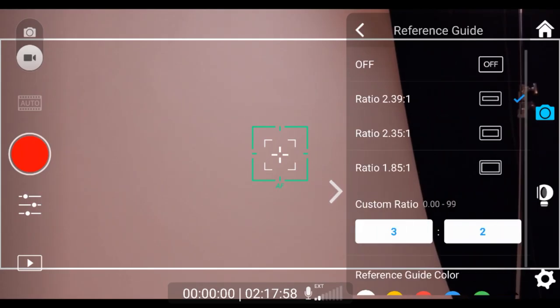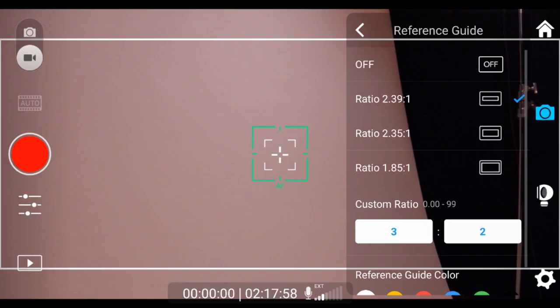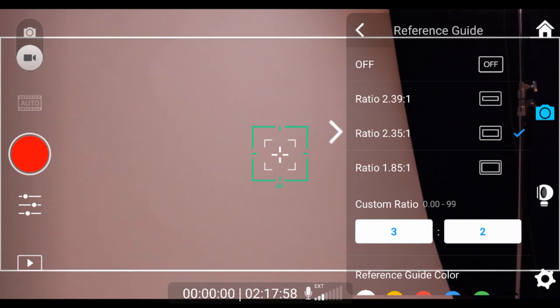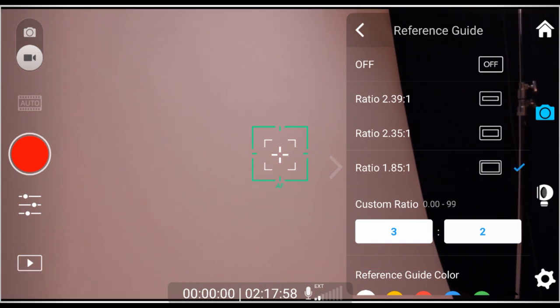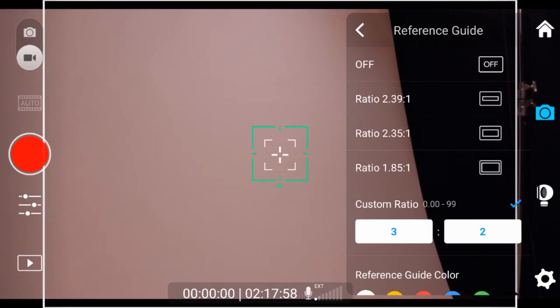The reference guide section is for overlaying reference guides for aspect ratios other than 16 by 9. Presets for ratios are available at 2.39 to 1, 2.35 to 1, and 1.85 to 1. You will also have an option for custom, where you can create your own ratios.